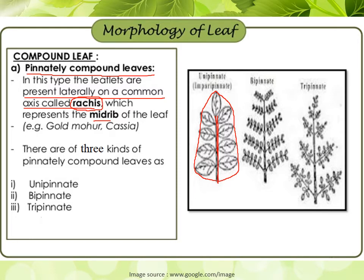Pinnately compound leaves are of three types. The first is unipinnate, where leaflets are arranged on both sides of the rachis and a single unpaired leaflet occurs at the apical part, making the number uneven. The second type is bipinnate, where secondary veins emerge from the rachis and leaflets are arranged in a paired way on both sides, always even in number with no single terminal leaflet. The last type is tripinnate, where from the rachis the secondary veins emerge, and from these secondary veins the leaflets occur in groups of three.